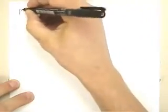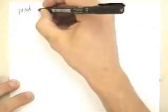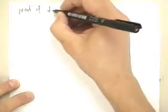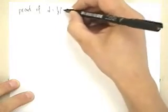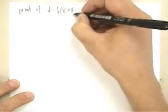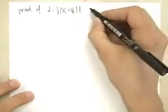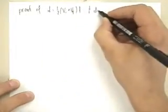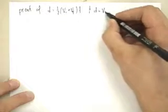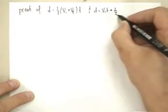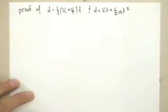All right, we are going to do the proof for our first kinematics equation. So we're going to do the proof of d equals 1 half vi plus vf t. And after we do this, it'll be a short little step to go d equals vi t plus 1 half a t squared. Those are our two proofs that we're going to do.